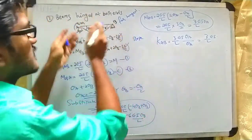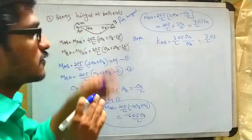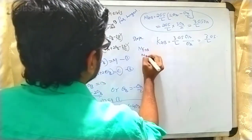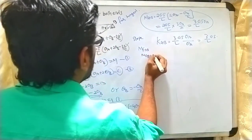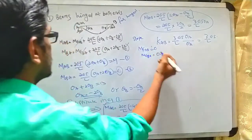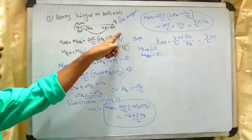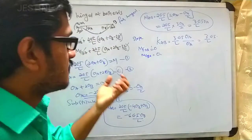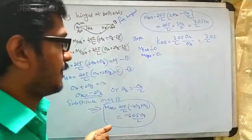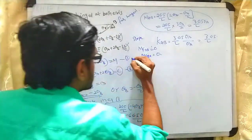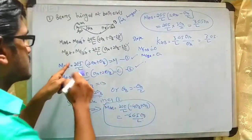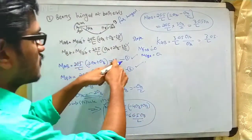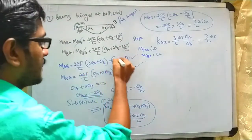Since there is no load, the fixed end moments are zero: MF_AB = 0 and MF_BA = 0. Delta is also zero since there is no vertical deflection or settlement. So we write the slope deflection equations as: M_AB = (2EI/L)(2θ_a + θ_b) = M.